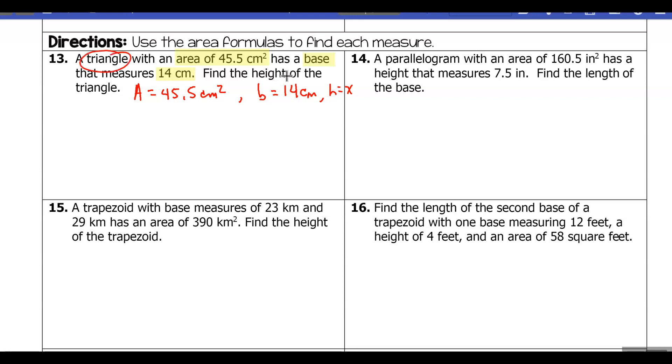Let's plug in what we know. We know the area is 45.5, so we'll substitute that in for A. We have one-half